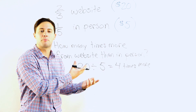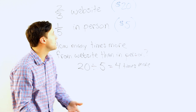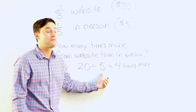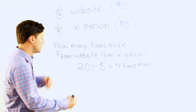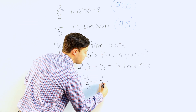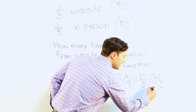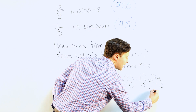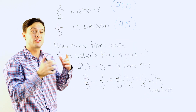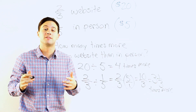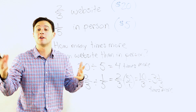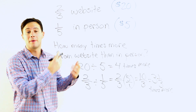Now that I know that's the process, I'm going to go back to my original numbers. So instead of 20 divided by 5, I'm going to do two-thirds divided by one-fifth, and it's three and a third times more. That's how we use the strategy of solve a simpler problem — when we have fractions, decimals, mixed numbers, or really large numbers, we want to make it simpler.